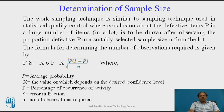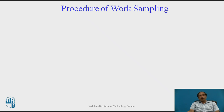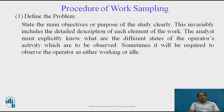The sampling technique relies on the sample size. The sample size formula is: x × σp = x × √(p(1−p)/n), where p is the average probability, x is the value depending on the desired confidence level, p is the percentage of occurrence of the activity, s is the error in the fraction, and n is the number of observations required. The two major determinants of sample size are the confidence level and the percentage error.